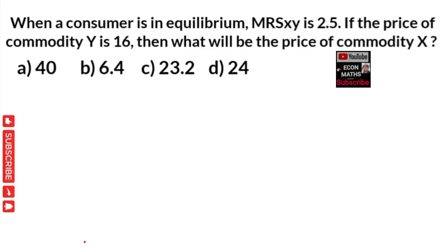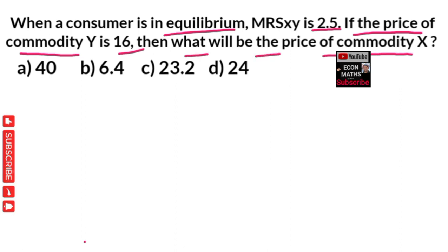In this video, we will try to solve a numerical on the consumer's equilibrium. The question is: when a consumer is in equilibrium, the marginal rate of substitution between X and Y is 2.5. If the price of commodity Y is 16, then what will be the price of commodity X? The options are 46.4, 23.2, or 40.